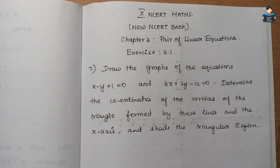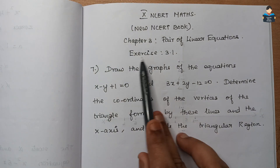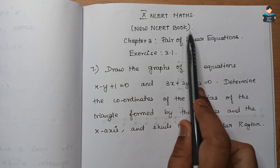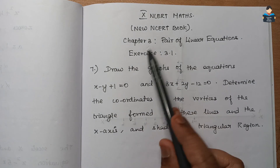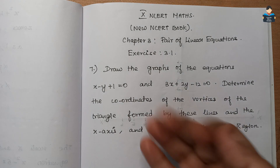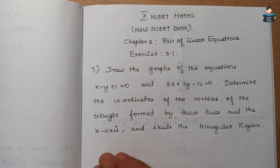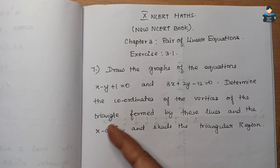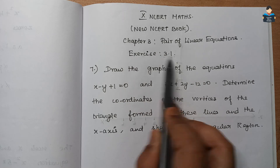Hello everyone, welcome to our channel. In this video, Class 10 NCERT Maths Chapter 3 - Pair of Linear Equations, Exercise 3.1, Question number 7. This is based on the new NCERT book; in the old edition book it is also Exercise 3.1, Question number 7.